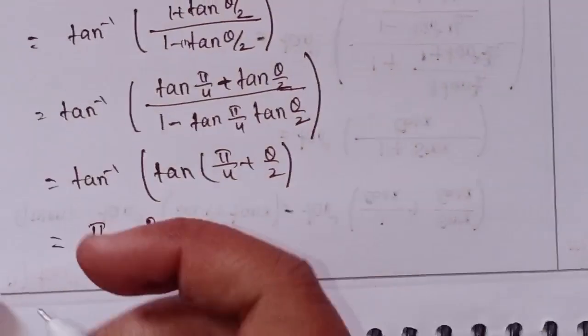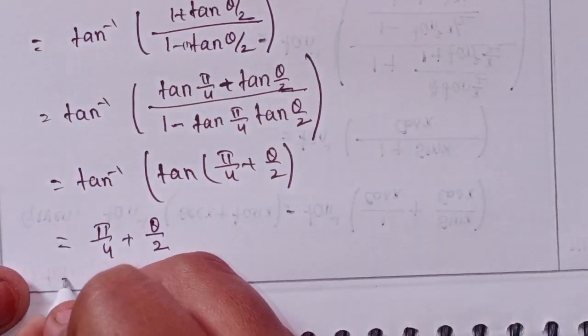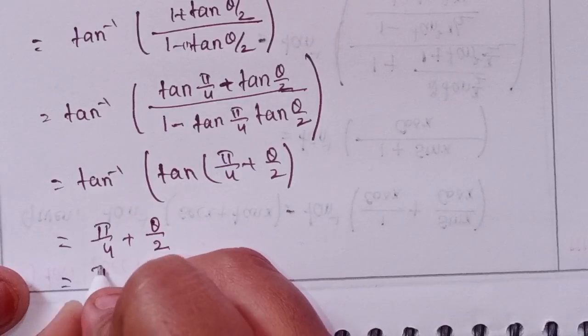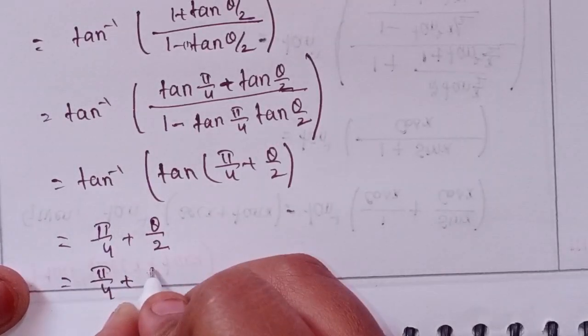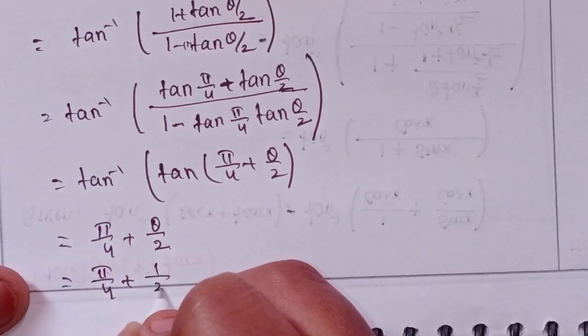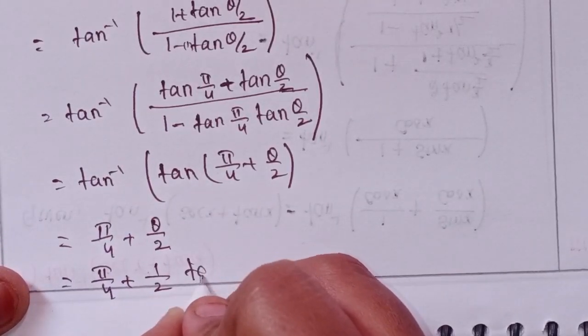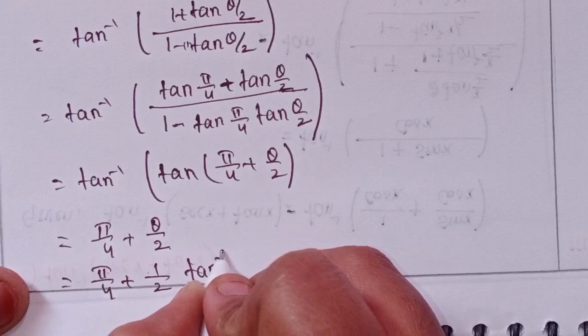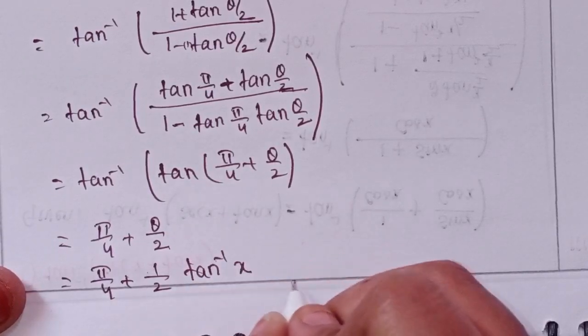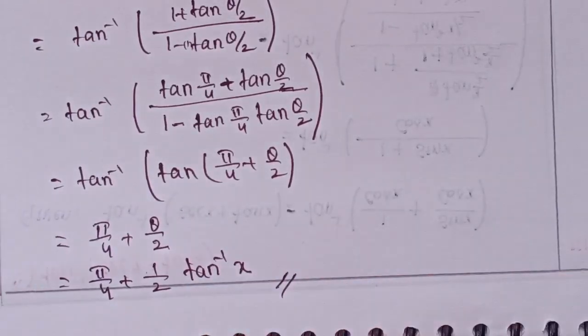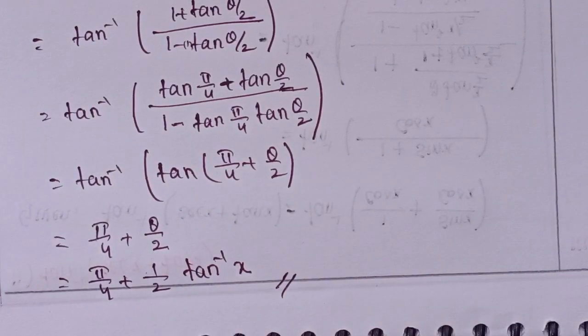So the final answer is π/4 plus (1/2) times tan inverse x. This is the solution of the fifth one.